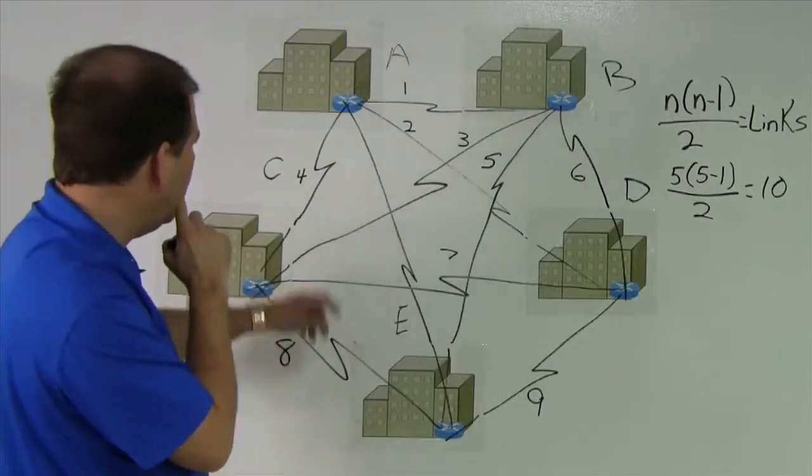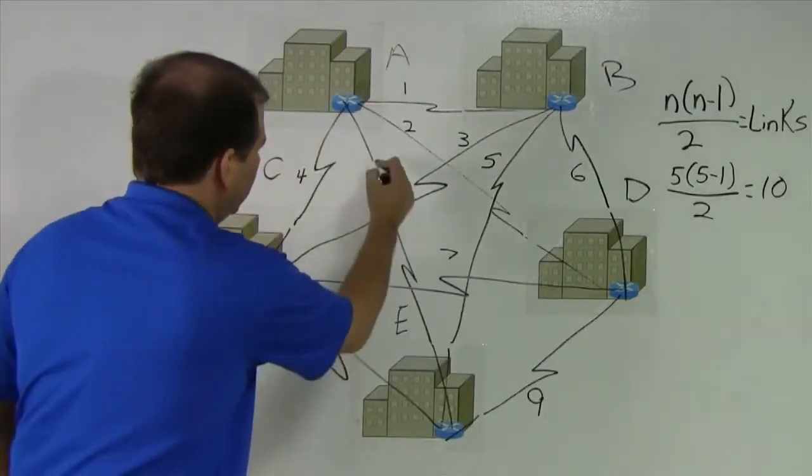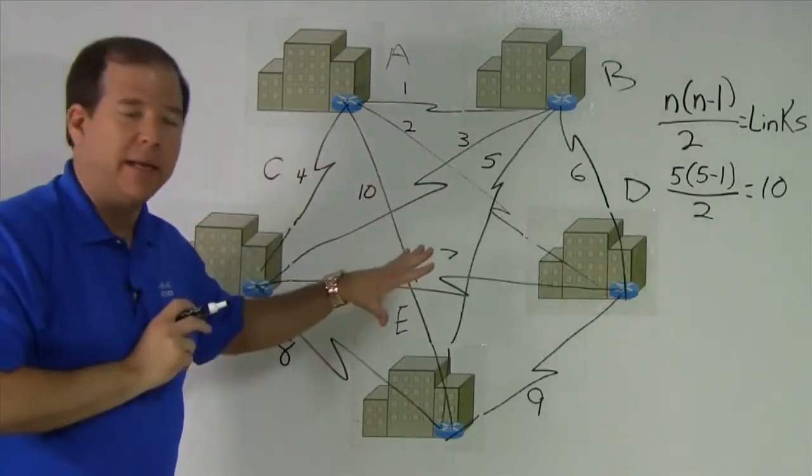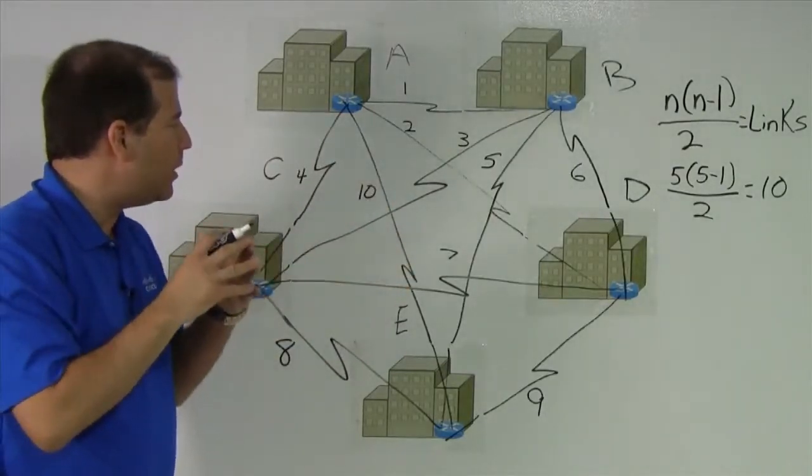I'm missing one. 1, 2, here it is. 10. We've got 10 links required to fully mesh all of these sites together.